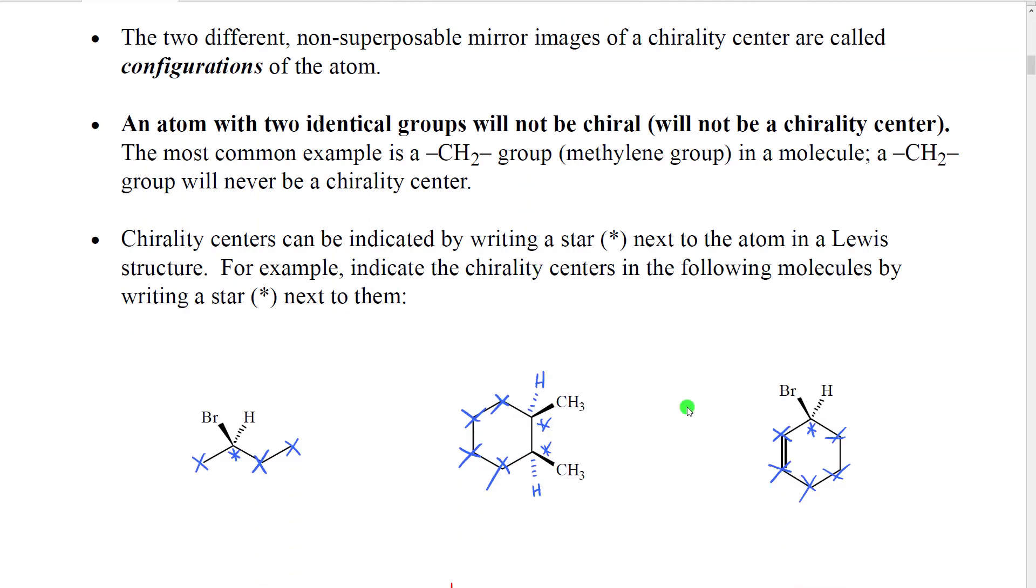The two different non-superposable mirror images of a chirality center are called configurations of the atom. We're going to learn how to name these configurations later on.